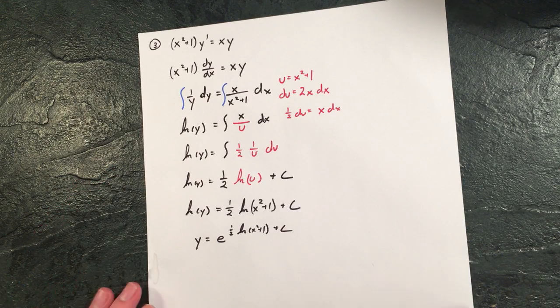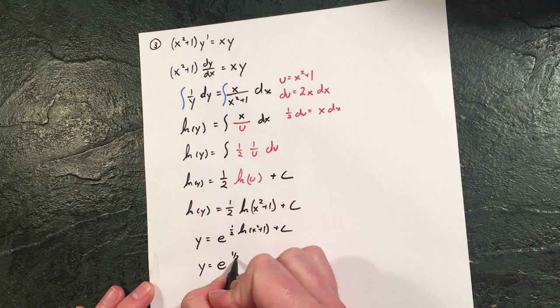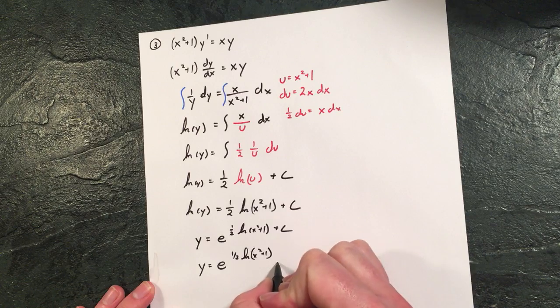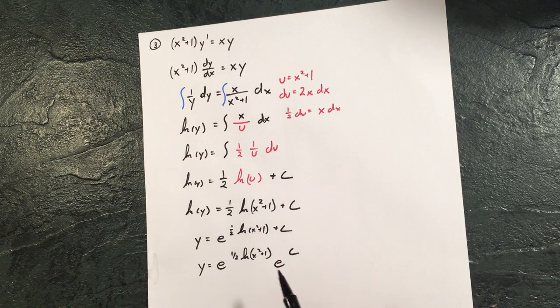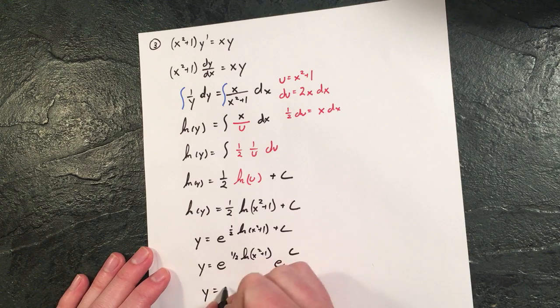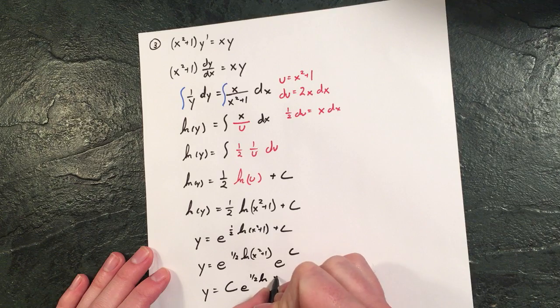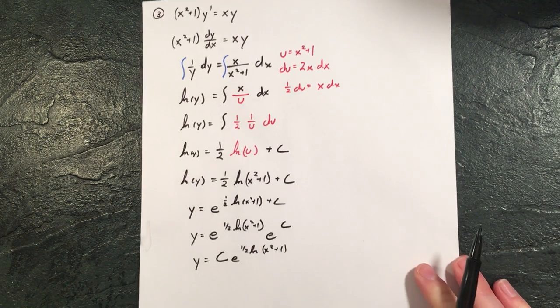And then we talked about this in the last video with that kind of plus c at the end. We could say that's like e to the c multiplying all these, which really we could just say is like c. e to the one half ln x squared plus one, if they asked you to go through that whole process.